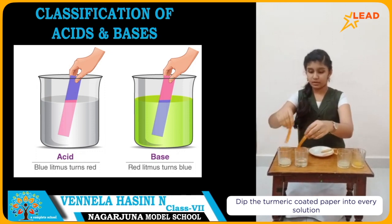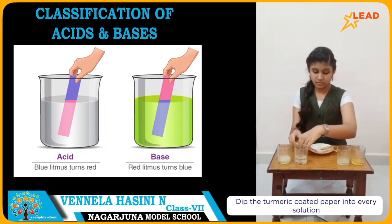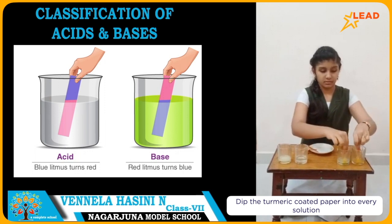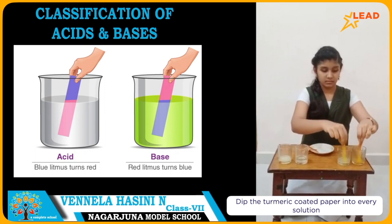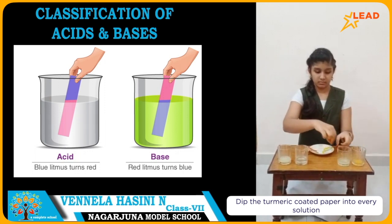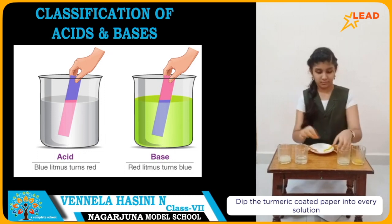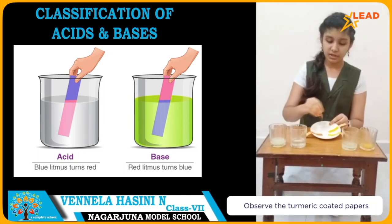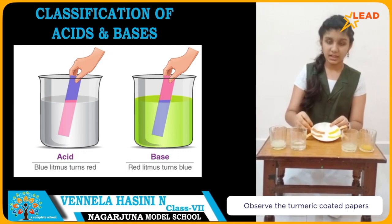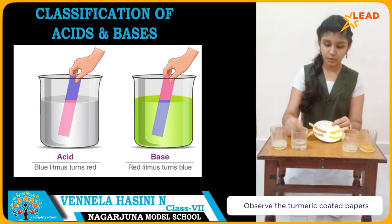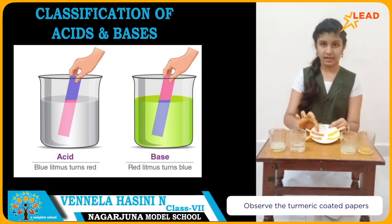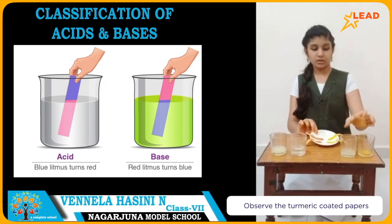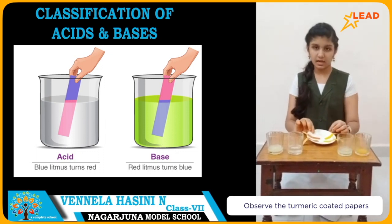Observe the turmeric coated papers. The turmeric coated papers which are dipped into baking soda solution and soap solution turn red. And the turmeric coated papers which are dipped into lemon juice and orange juice remain yellow.